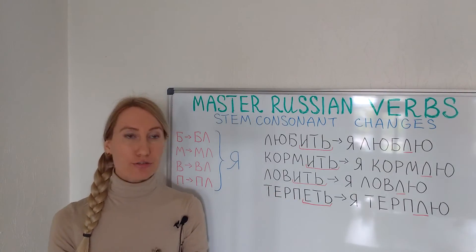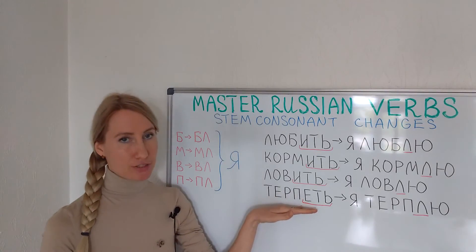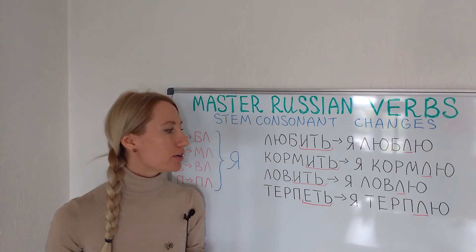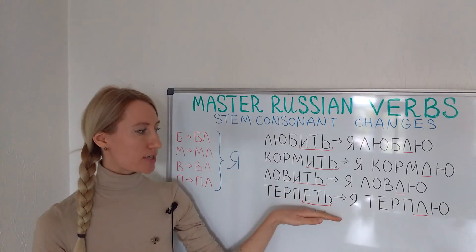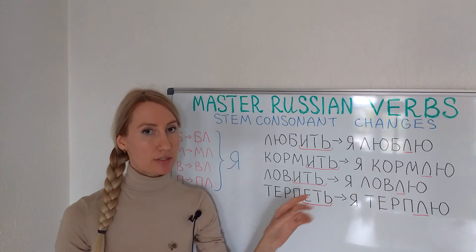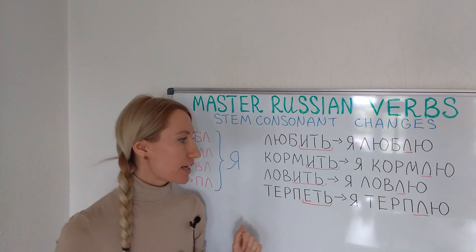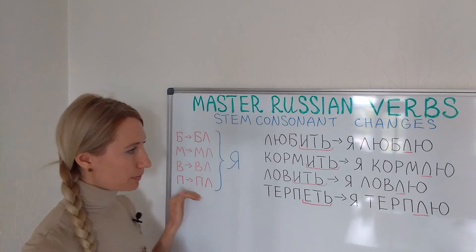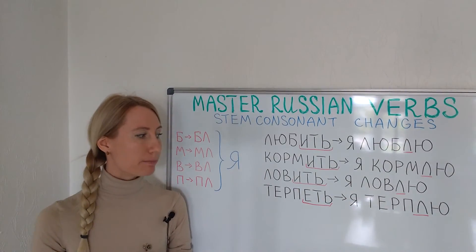And the last one, терпеть, to bear. It also has the second conjugation type because it's an exception. It's among these 11 verbs I've talked about in my previous videos. So according to the transformation, я терплю.